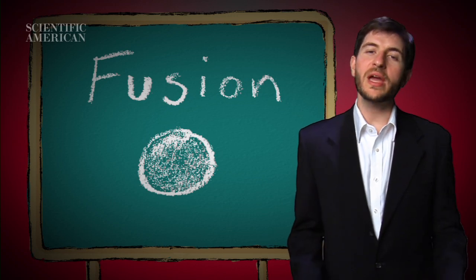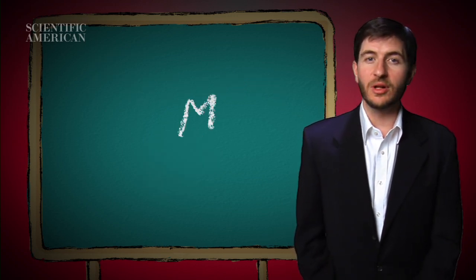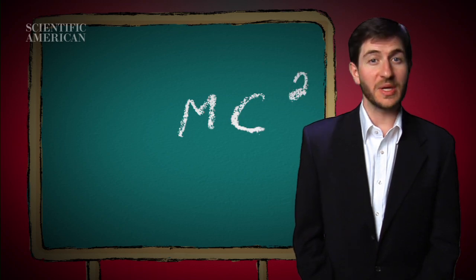In both cases, we end up with a little less mass than what we started with. That missing mass multiplies by c squared to become E.